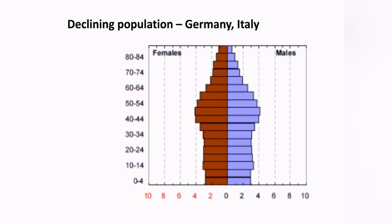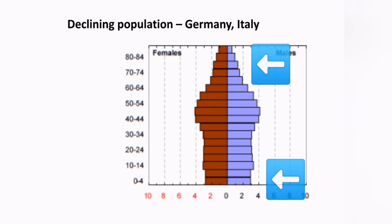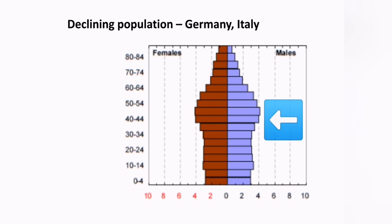A declining or shrinking population, like what we see in Germany right now, shows a diamond shape — with fewer young children aged 0–4, more elderly people in their 70s and 80s, and the bulk of the population aged 40 to 55. The population is not growing because people aged 40–55 are not of child-bearing age. The hope for future population growth lies in the very young, aged 0–4 and 10–14, who will be the parents of the future.